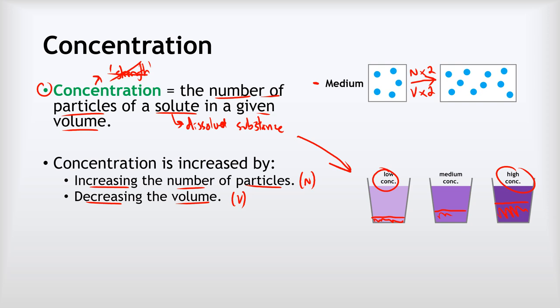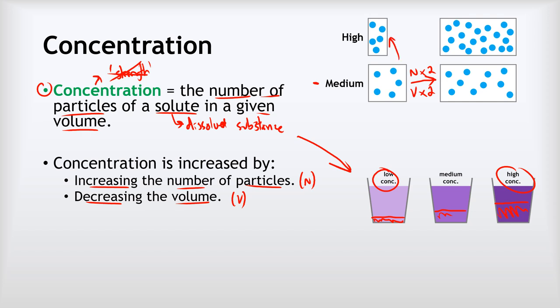To increase the concentration, we could either have the same number of particles in half the volume — same particles but half the volume. Or we could keep the volume the same but double the number of particles. Either increasing the number of particles or decreasing the volume increases the concentration.